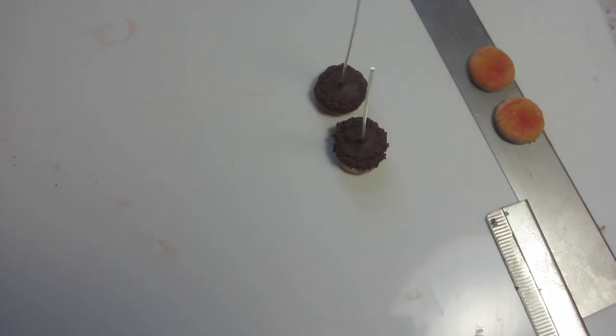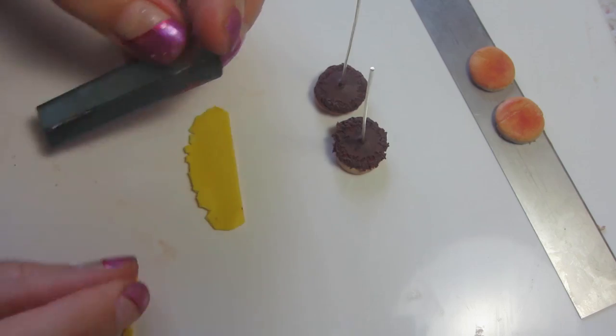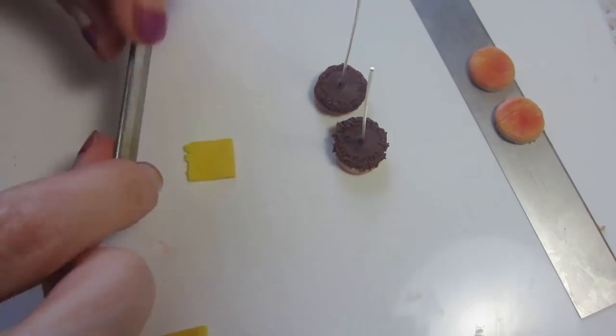Now it's time for the cheese. So whatever color you'd like for the cheese, I'm using more of a light color and just cut that into a square.